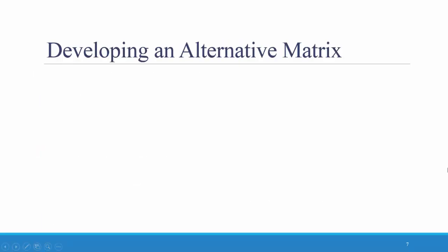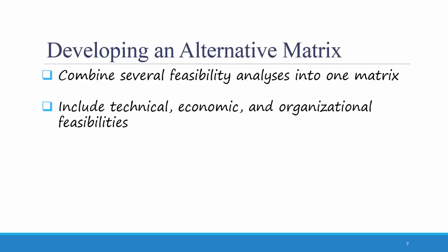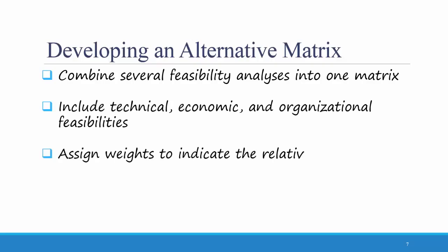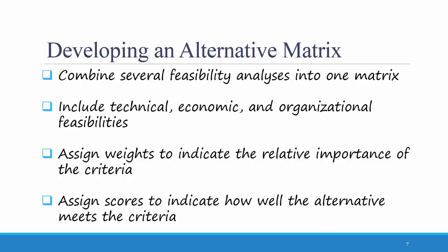If you're having trouble deciding on an acquisition strategy, one tool that might be helpful is an alternative matrix. An alternative matrix combines several feasibility analyses into one matrix. It includes technical, economic, and organizational feasibilities. For each criteria, you assign weights to indicate its relative importance to your organization. Finally, you assign scores to indicate how well the alternative meets the criteria.